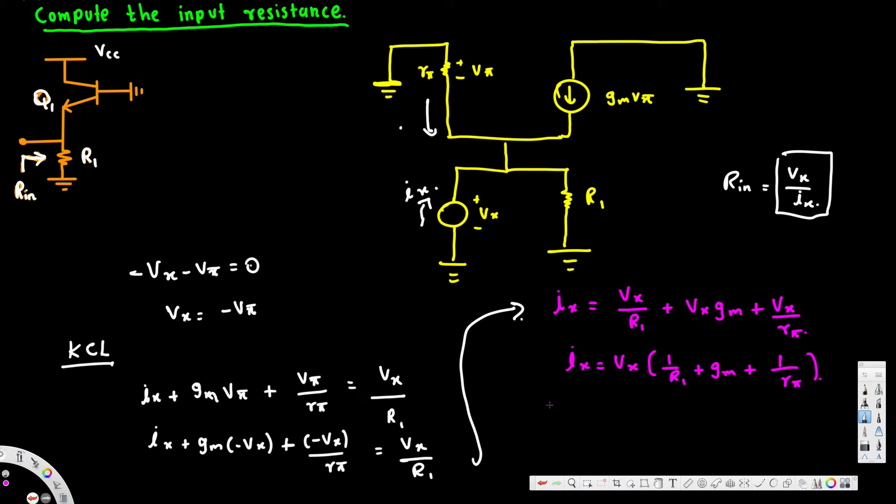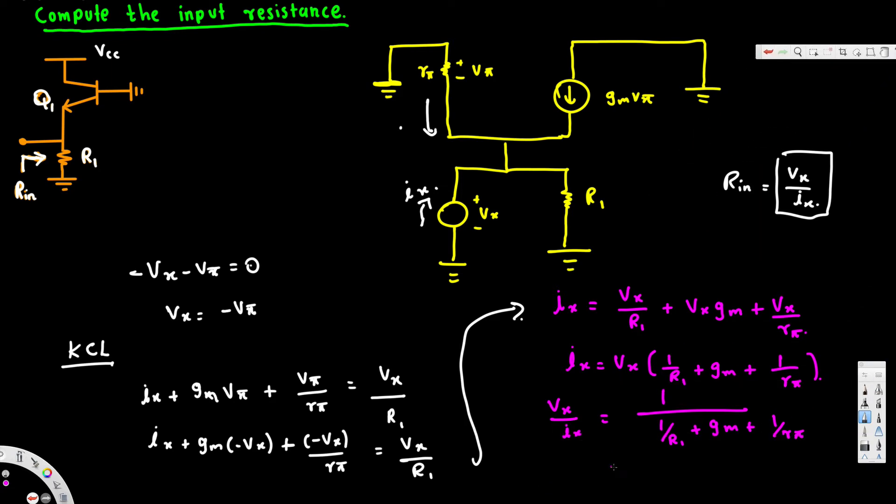Then v_x over i_x is equivalent to 1 over (1/r1 + gm + 1/r_phi). This is the final derivation. Now to write this in a better way, we can make everything in terms of parallel.